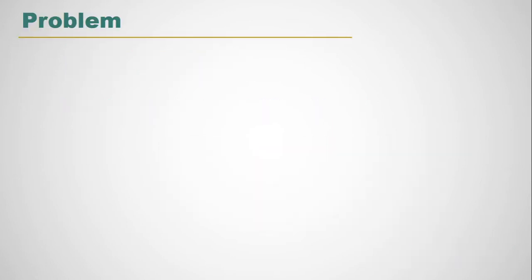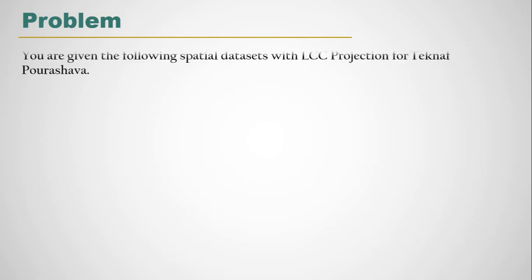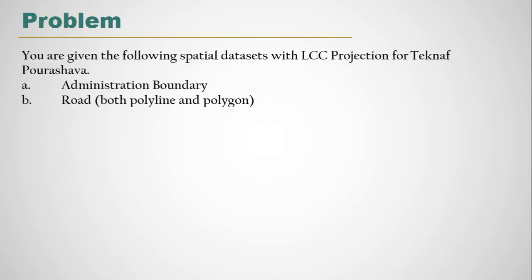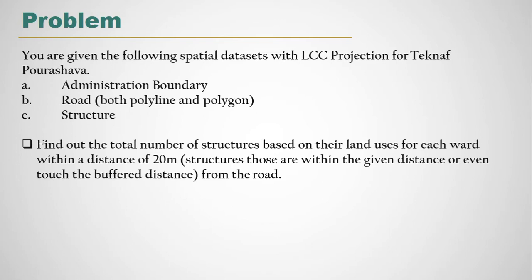Now I am introducing you with our project. You are given the following spatial datasets with Lambert Conformal projection for Tekna Porusava: one administrative boundary, two road — both polyline and polygon — and structure. You are asked to find out the total number of structures based on their land uses for each ward within a distance of 20 meters — structures that are within the given distance or even touch the buffer distance from the road.